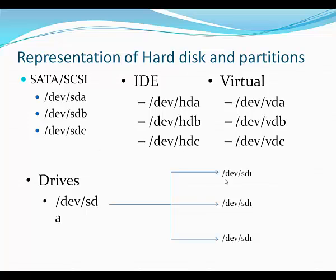There are various kinds of disks — SATA, IDE, or virtual disks. For SATA or SCSI, partitions are shown as /dev/sda — where 'dev' stands for devices and 'sda' is for SATA/SCSI devices. Additional drives go as /dev/sdb, /dev/sdc, and so on. For IDE drives, devices are named /dev/hda, /dev/hdb, and so on. For virtual drives, the character changes from 'h' to 'v', so it becomes /dev/vda, /dev/vdb, and so on.